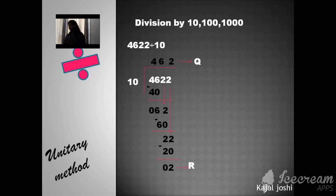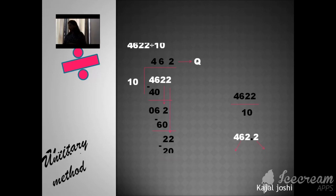Now I am taking a short method. So 462 is the quotient and 2 is the remainder. So 10 has 1 zero. So we cut 1 digit right to left and put that point. So 462.2 is the quotient and 2 is the remainder. It is a very easy method. Now look at here.